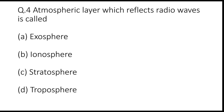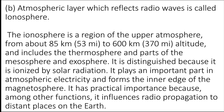Question 4: The atmospheric layer which reflects radio waves is called — options are A: exosphere, B: ionosphere, C: stratosphere, or D: troposphere. The correct answer is B — the ionosphere. The ionosphere is a region of the upper atmosphere from above 85 kilometers to 600 kilometers altitude, including the thermosphere and parts of the mesosphere and exosphere. It is ionized by solar radiation, plays an important part in atmospheric electricity, and influences radio propagation to distant places on the earth.